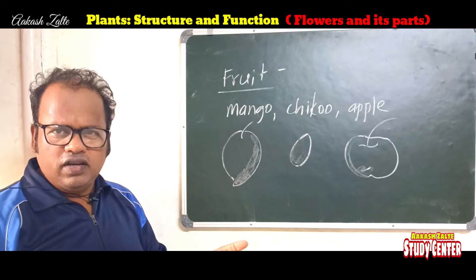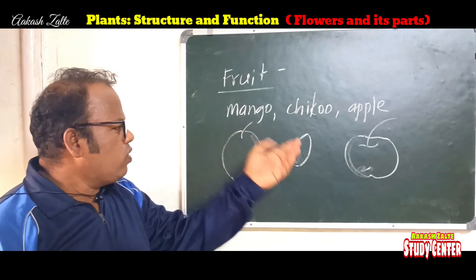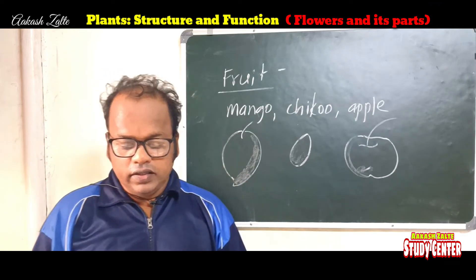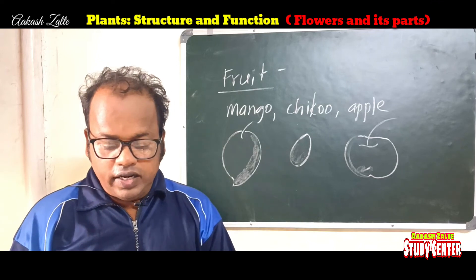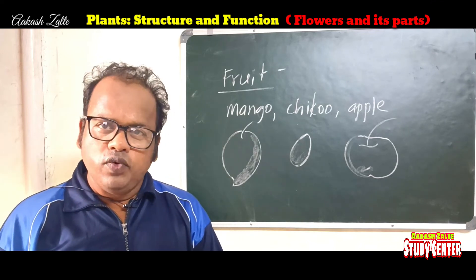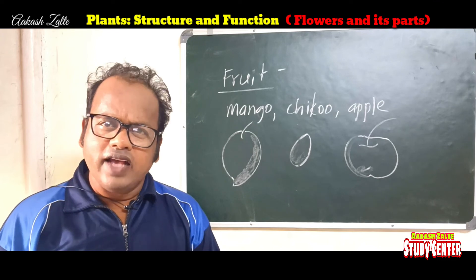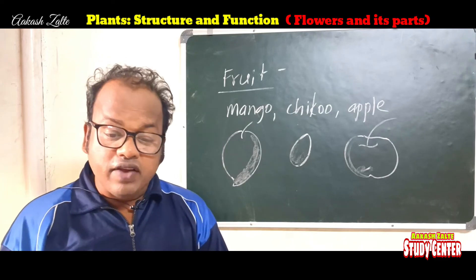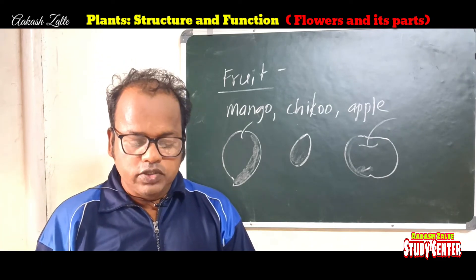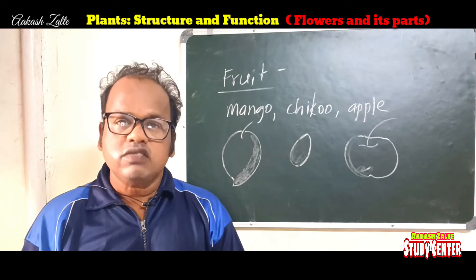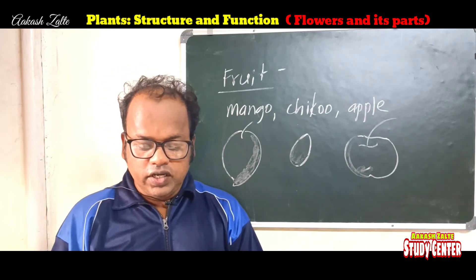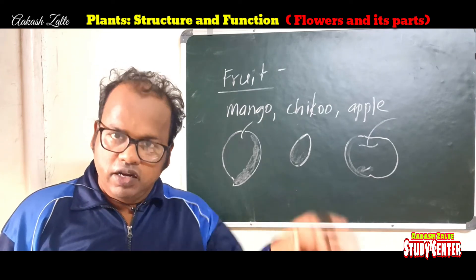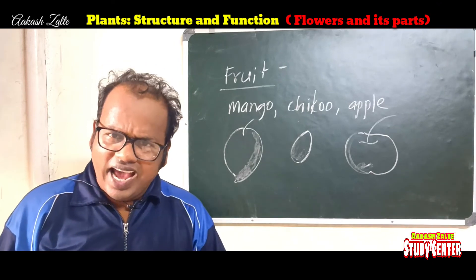There are many fruits in our surroundings — for example, mango, chiku, and apple. Each type of fruit has its own characteristics. There are variations in their shape, color, and taste. Every fruit is special. For example, mango contains only one seed, whereas jackfruit consists of many small fruitlets, each with its own seed — that means jackfruit consists of many sections in the inner part, and each part has its own seed.